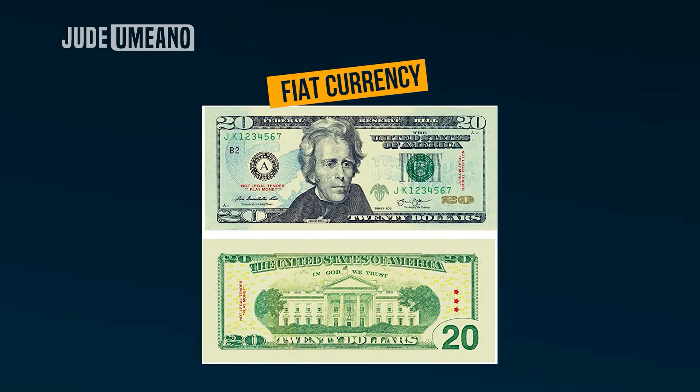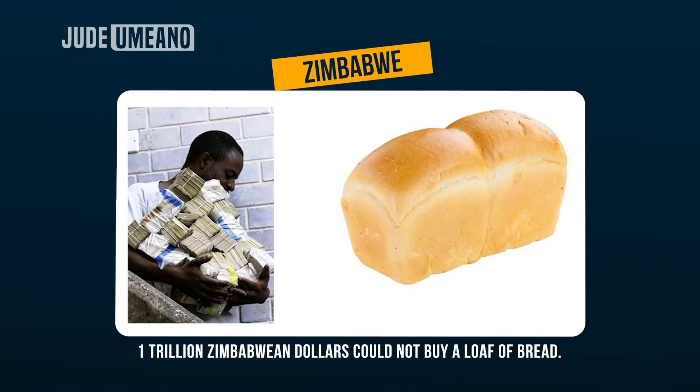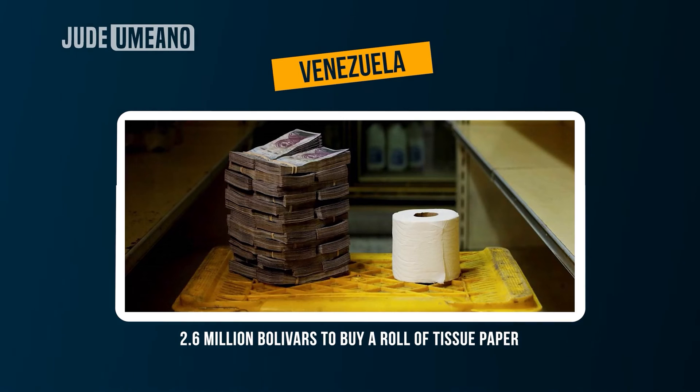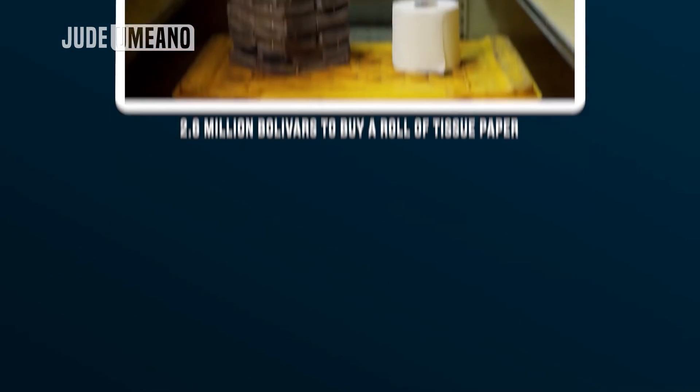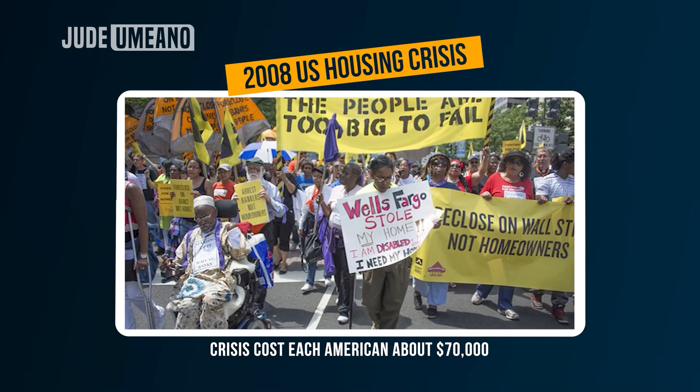Paper money transitioned from the gold standard to fiat money. Now the government could print as much money as they want without any gold justification, and many governments abused this. In Zimbabwe, they printed so much money that one trillion Zimbabwean dollars could not buy a loaf of bread. In Venezuela, you would need 2.6 million bolivars to buy a roll of tissue paper. And in 2008, the US experienced a housing crisis that, according to PBS News, cost each American about 70,000 dollars.